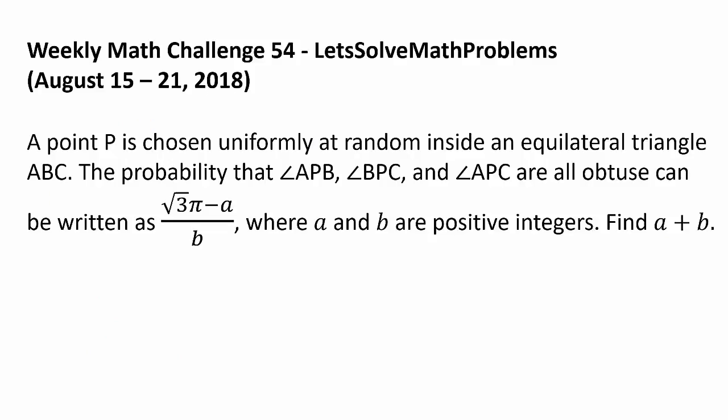A point P is chosen uniformly at random inside an equilateral triangle ABC. The probability that angle APB, angle BPC, and angle APC are all obtuse, can be written as square root of 3 pi minus A all divided by B, where A and B are positive integers. Find A plus B.